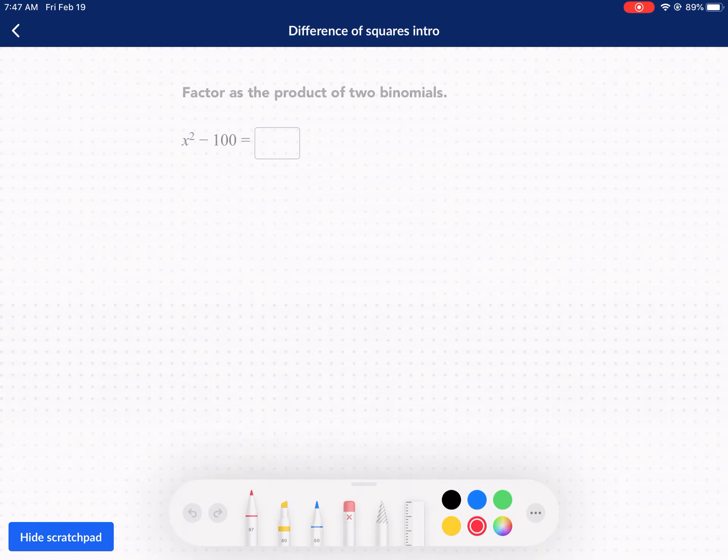The pattern for difference of squares is first, we only have two terms. So it's not like our normal factoring of trinomials. It's a little bit different.